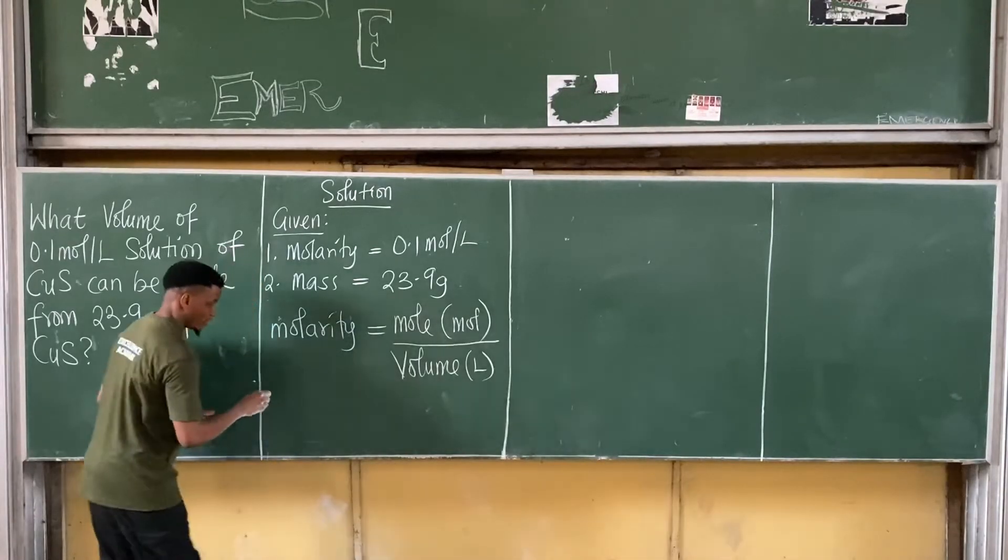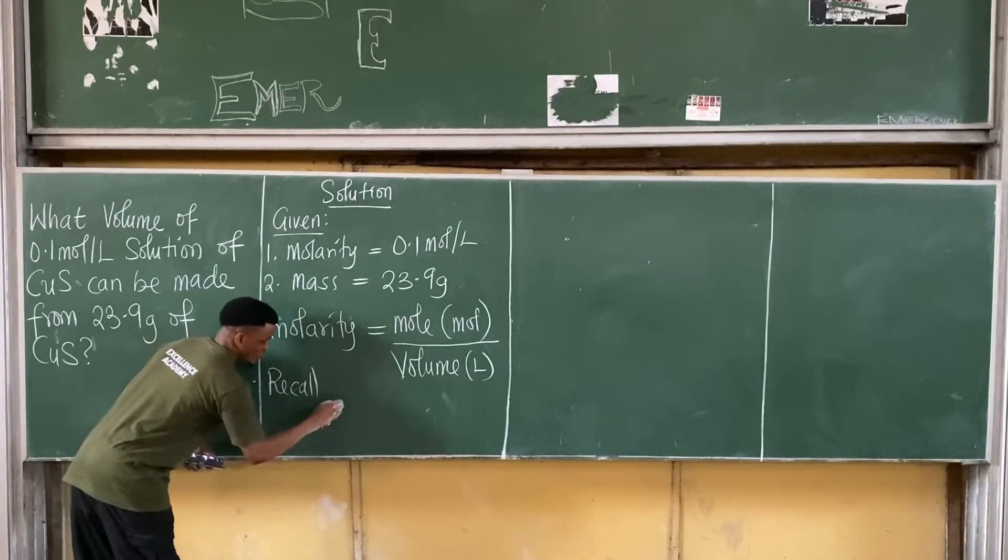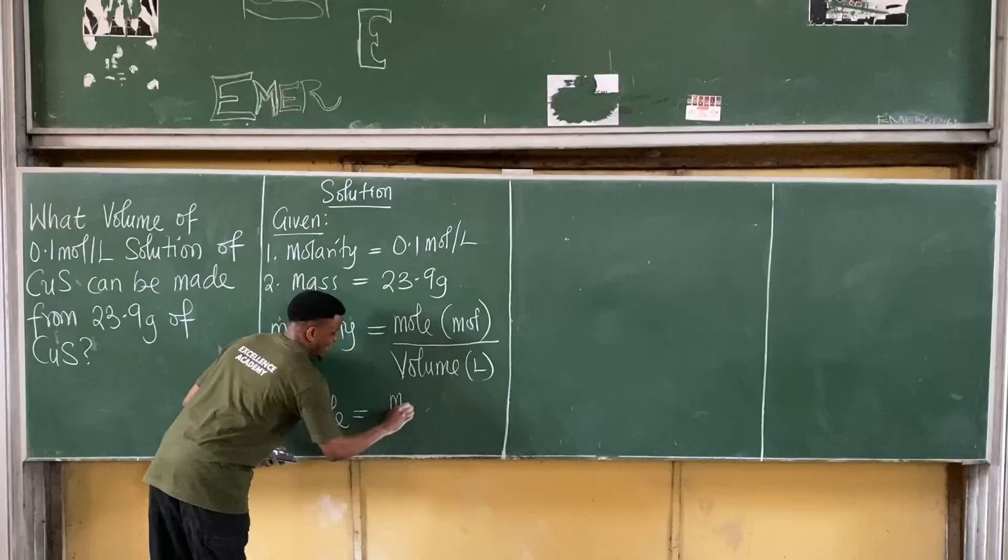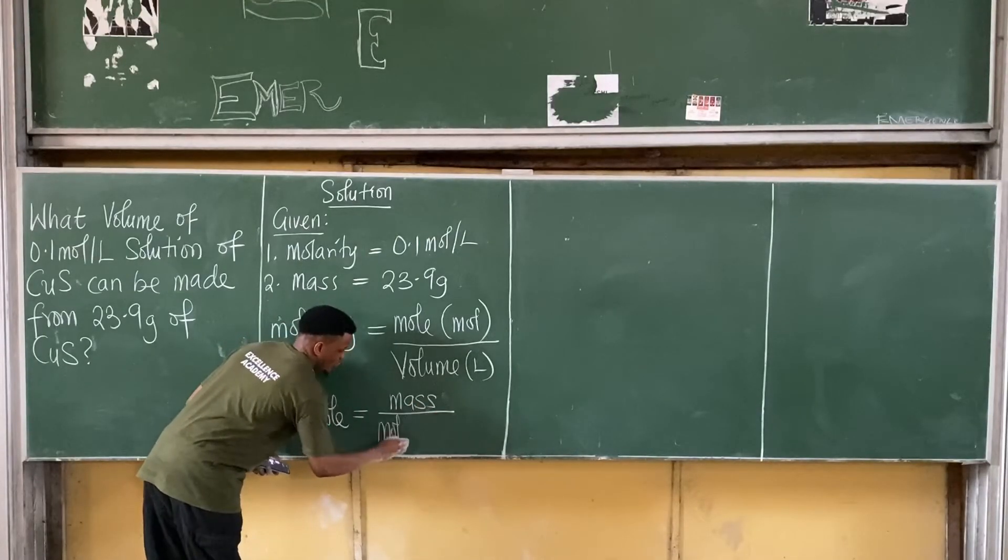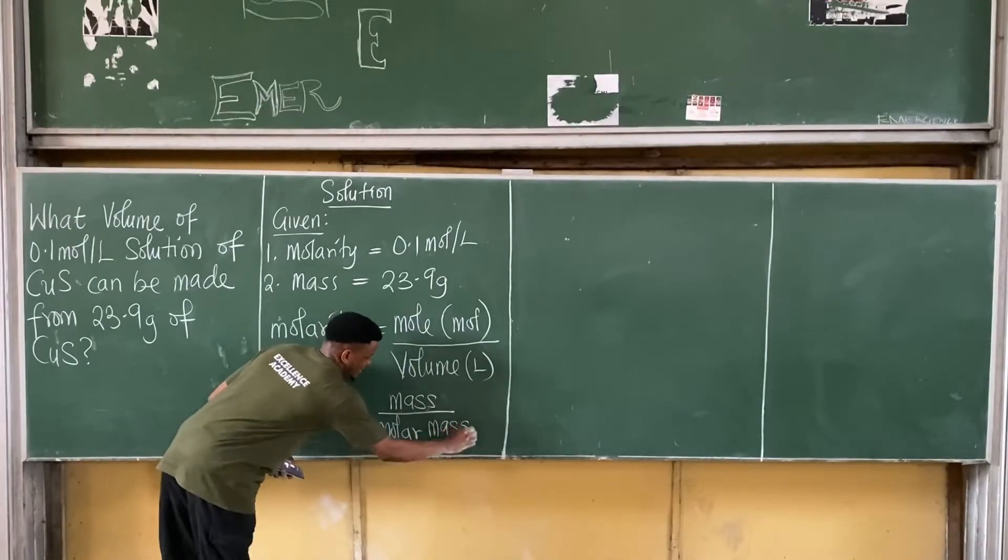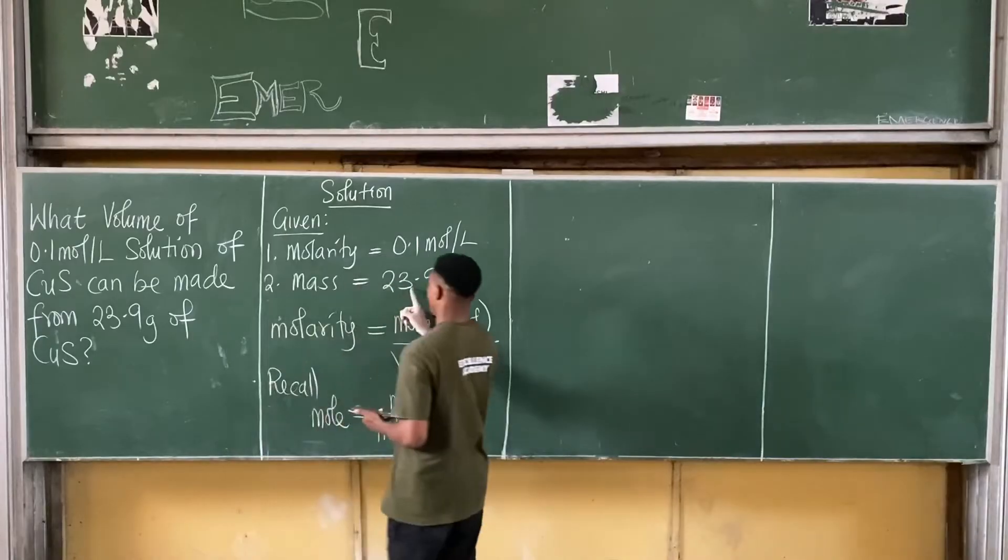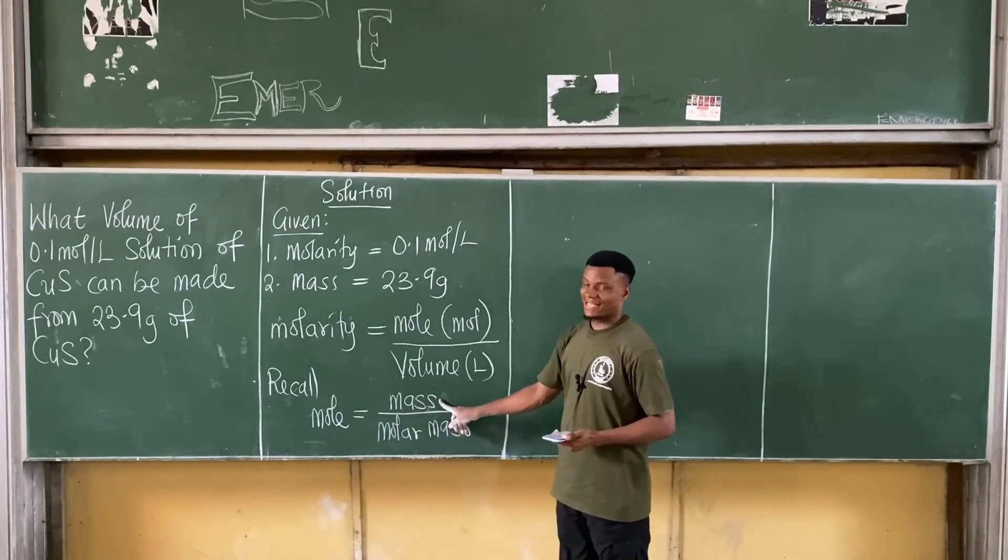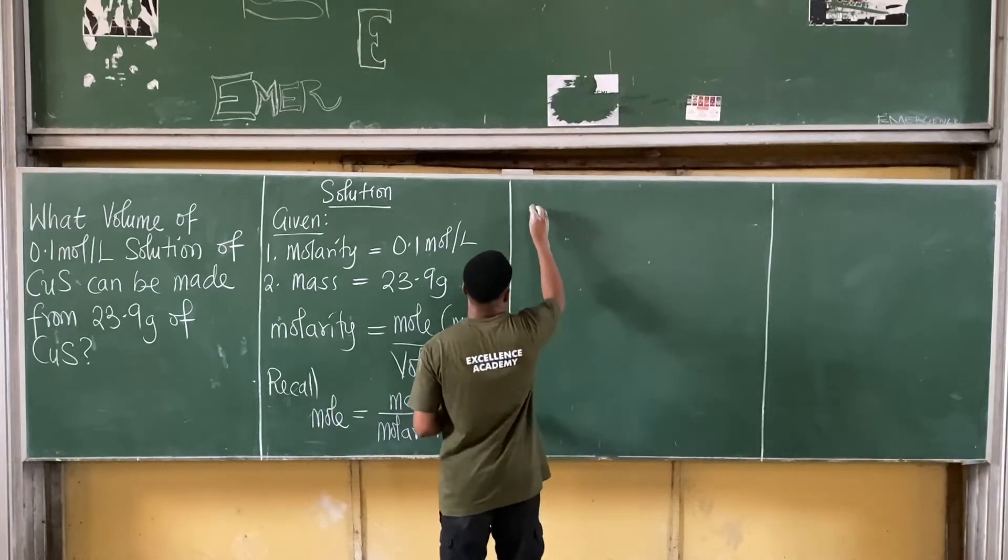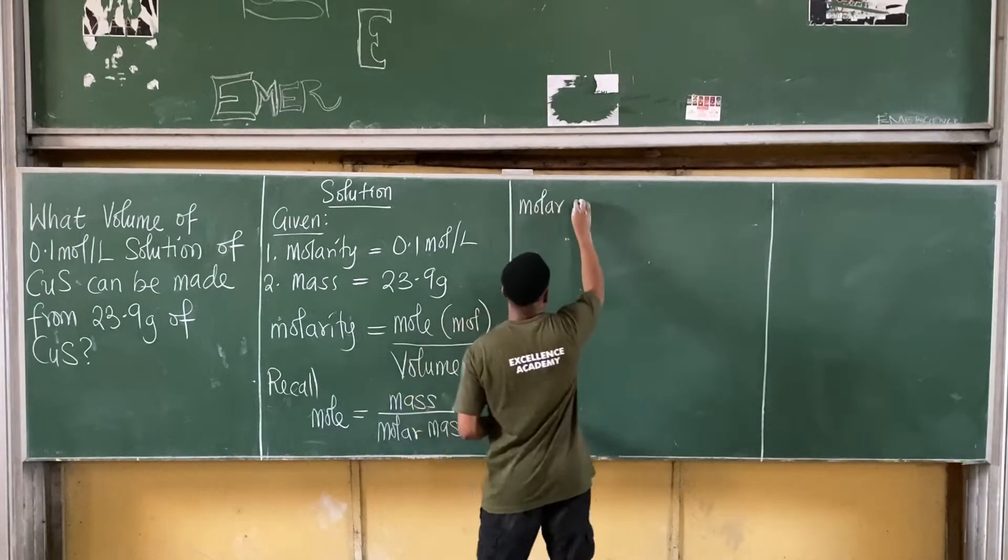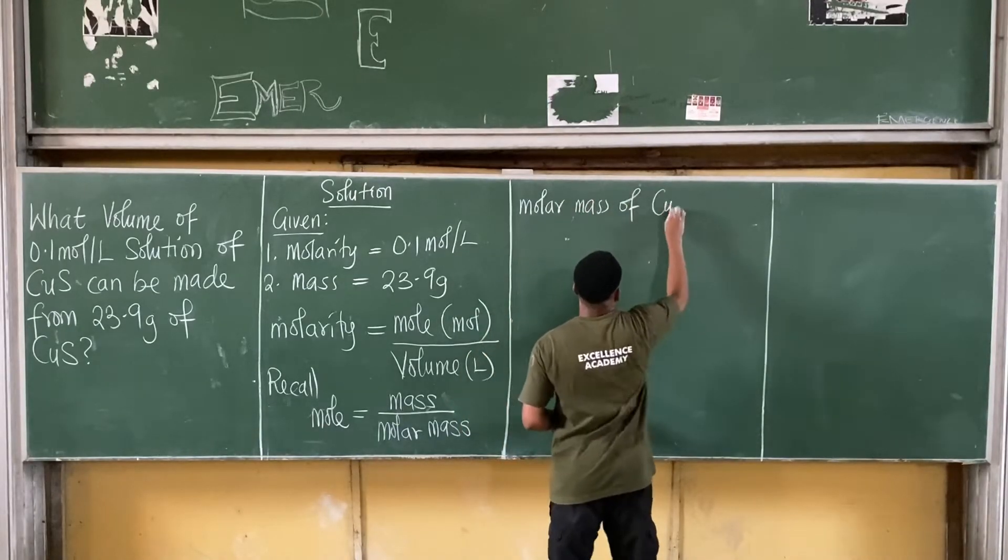How do you calculate mole? Recall your formula. So recall that the formula is that mole is equal to mass all over molar mass. So I'm giving the mass as 23.9. This value is there. So my next task would be to find the molar mass of copper 2 sulfide.